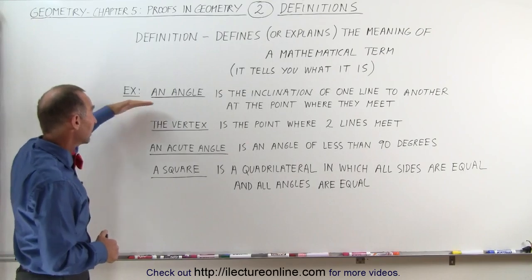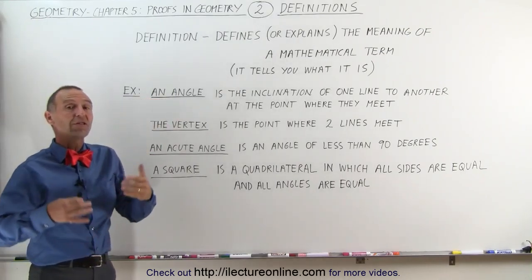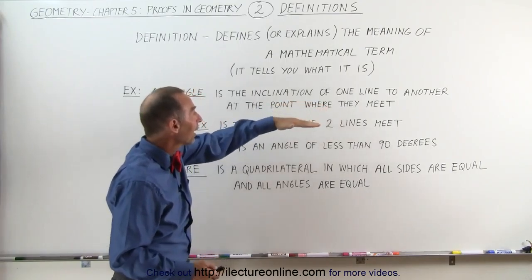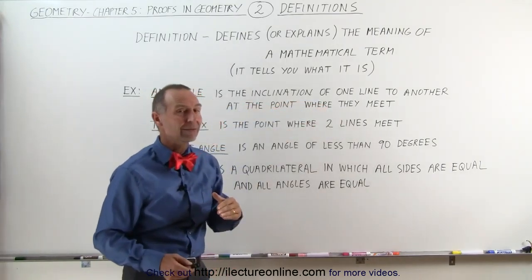Some examples of that. Here first we have an angle. What is the definition of an angle? It is the inclination of one line to another at the point where they meet.